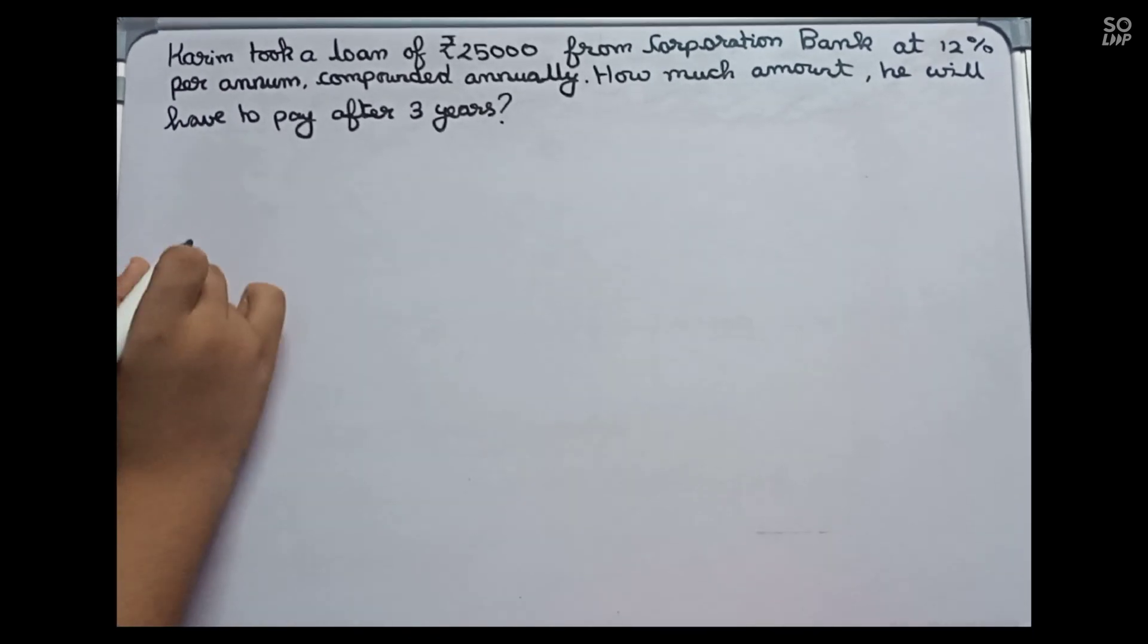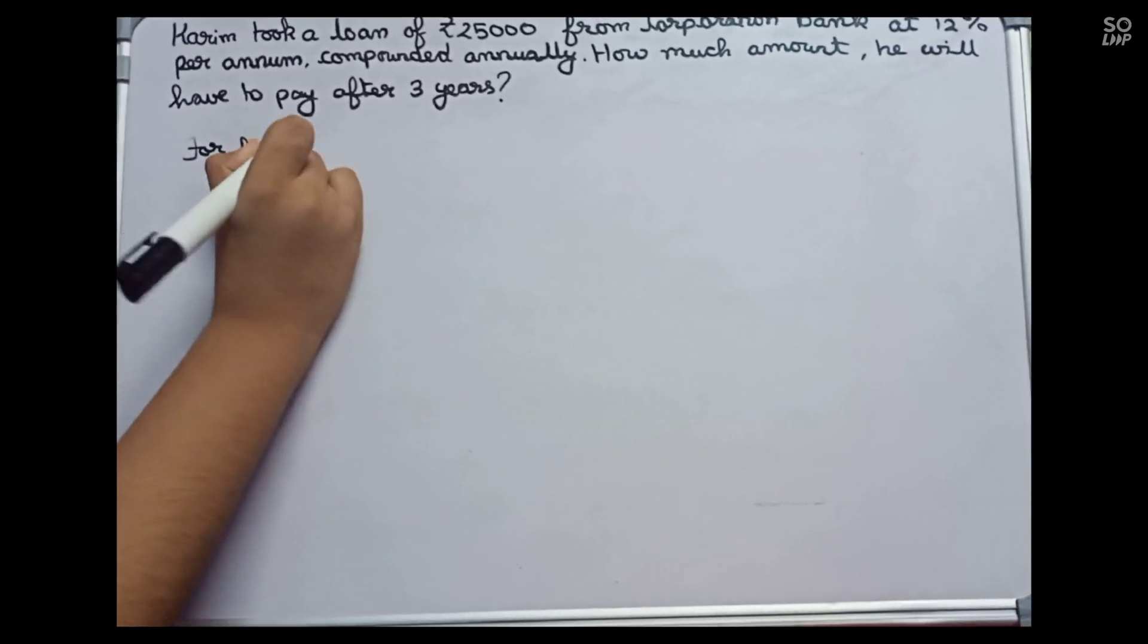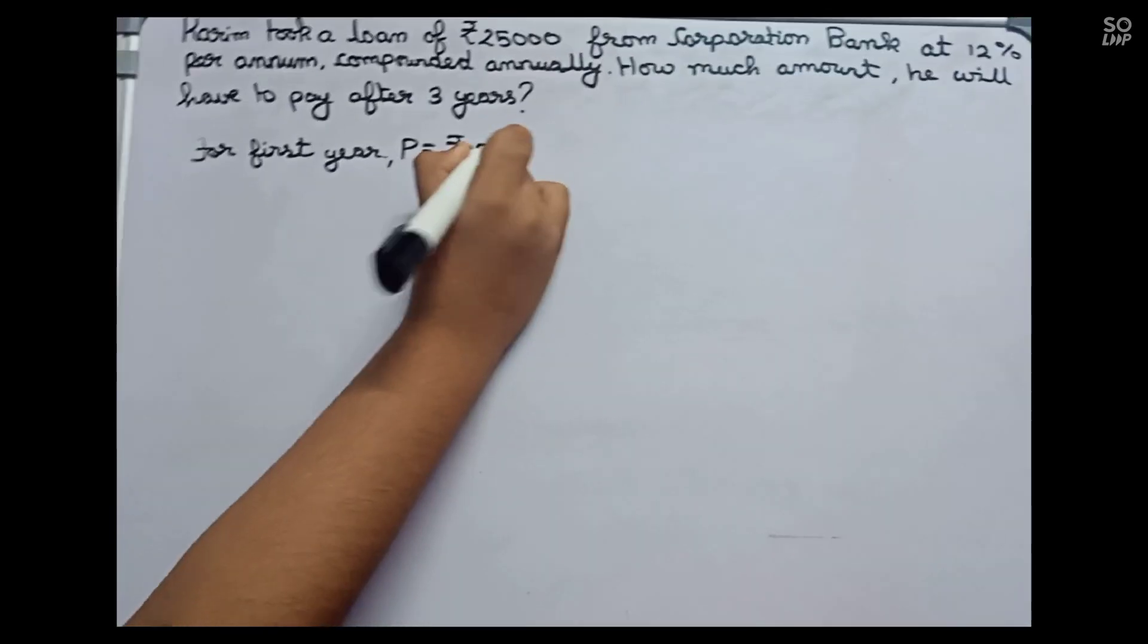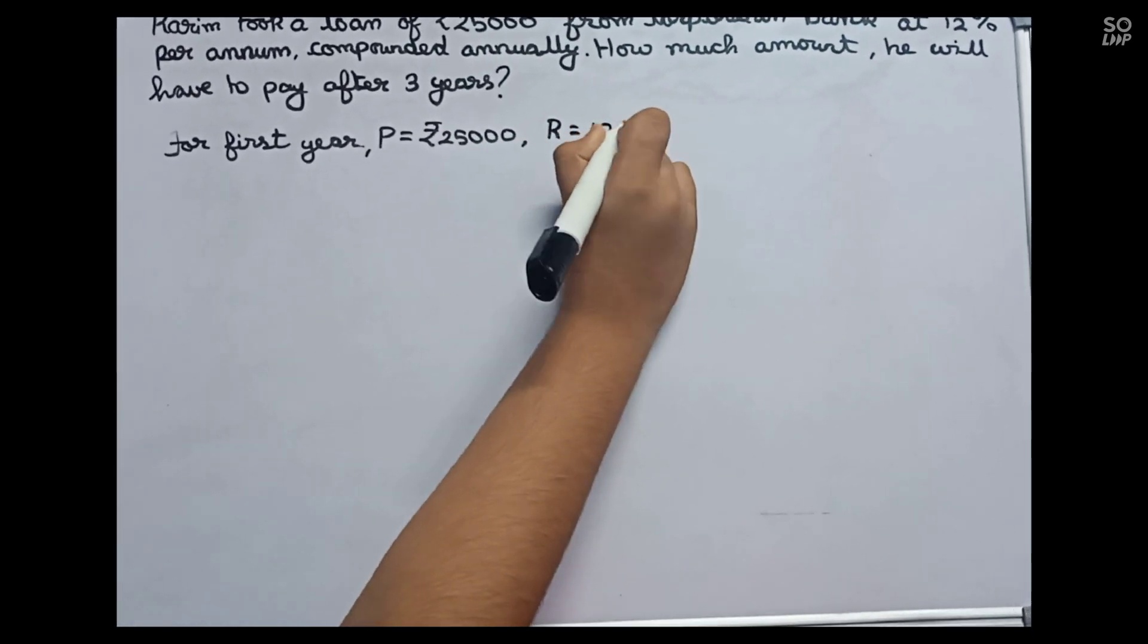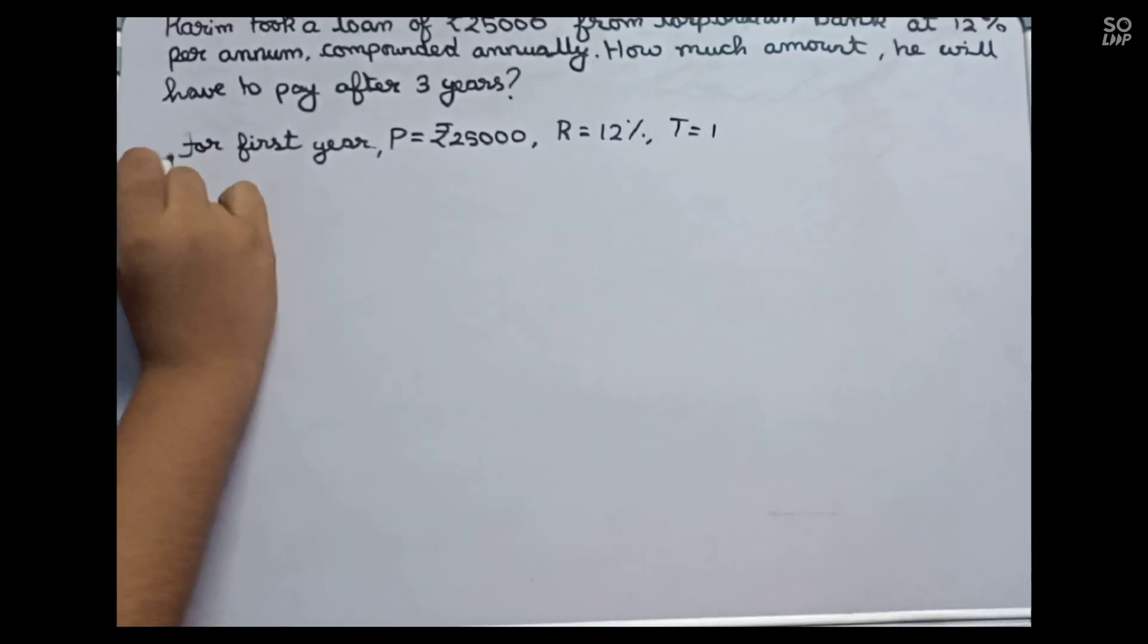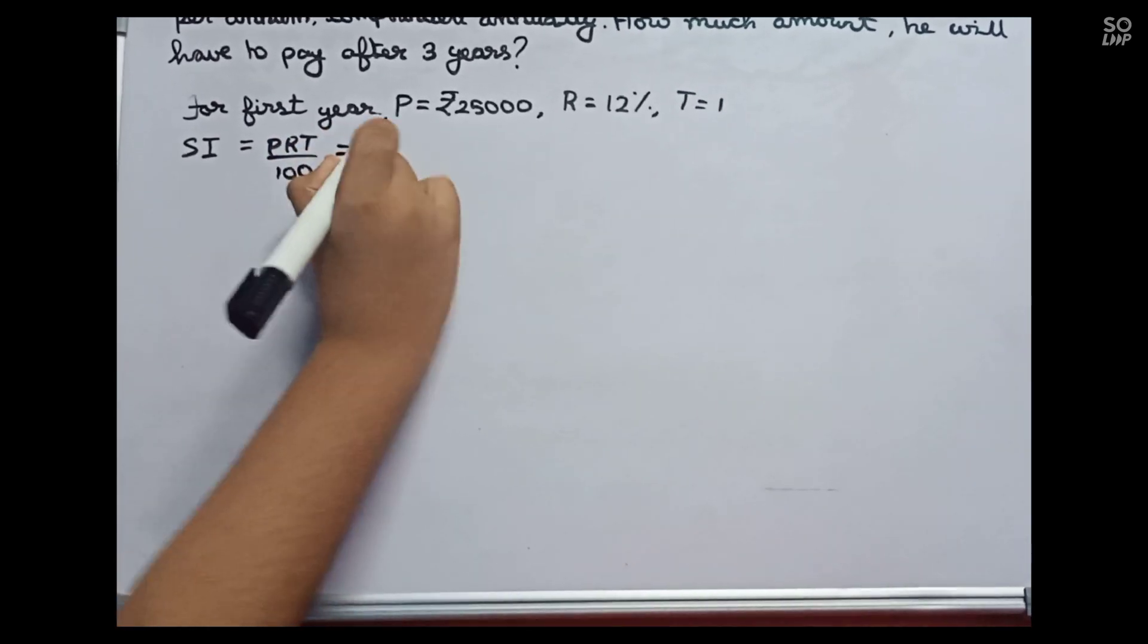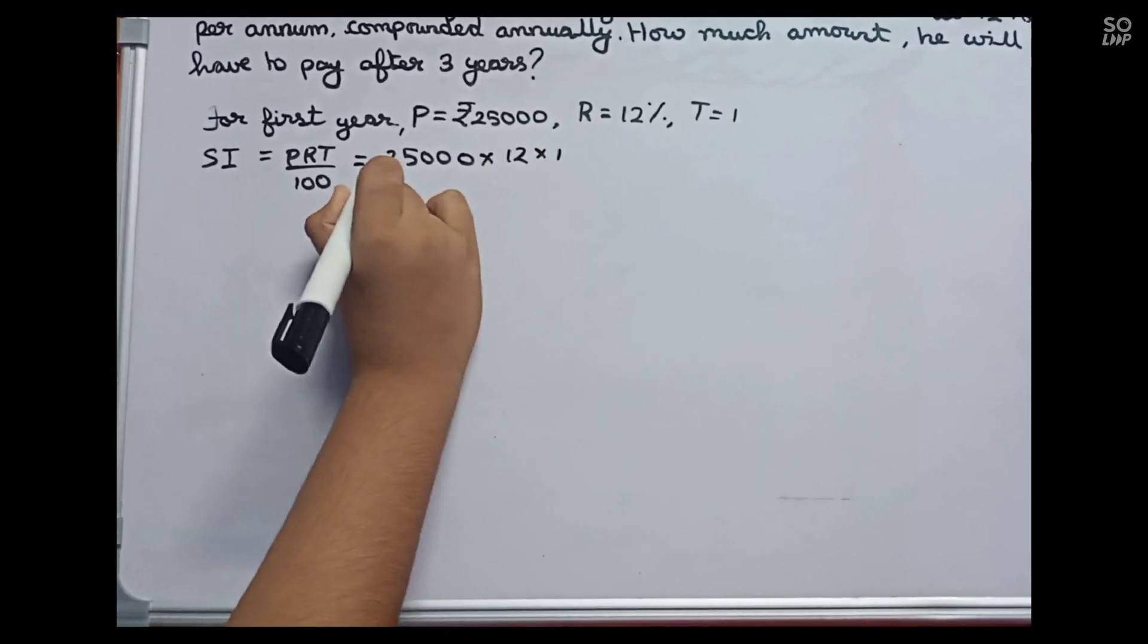So let's start. For first year, we will use simple interest method. Here P, that is principal, equals rupees 25,000; R, that is rate, equals 12%; and time we will take one year. Now we find SI. SI equals to the formula PRT by 100, equals to 25,000 into 12 into 1 by 100.